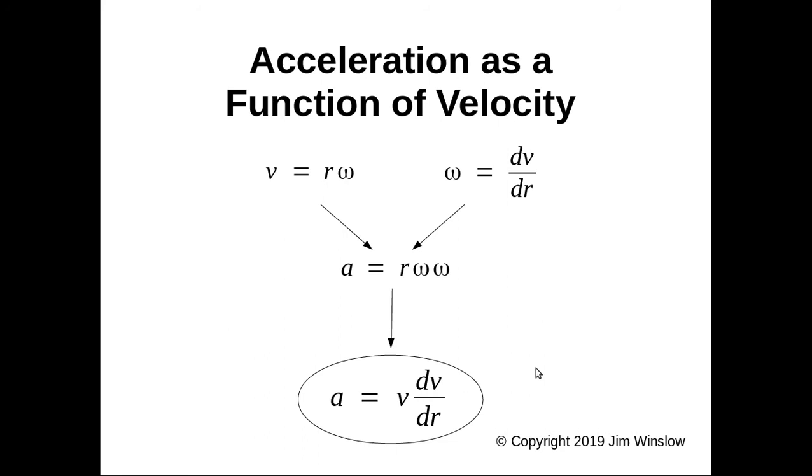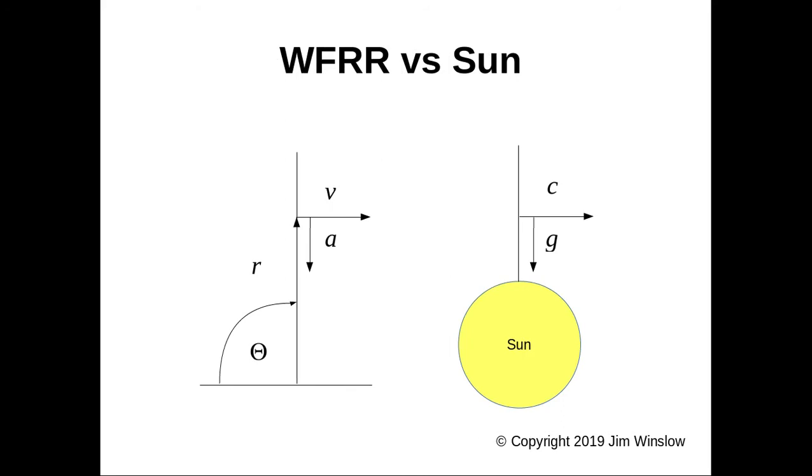Here's where things get profound. You have here the rotating rod where v, the speed, is high up here and low here. Same thing for the sun where a large mass, c is high here and low as you approach the sun.